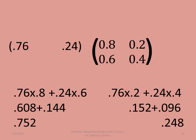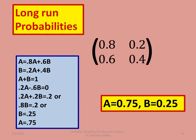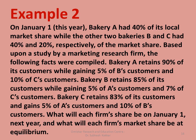To find the long-run (equilibrium) probabilities, we set up equations from the transition matrix [0.8, 0.2; 0.6, 0.4]: A = 0.8A + 0.6B and B = 0.2A + 0.4B, with A + B = 1. Solving these equations gives A = 0.75 and B = 0.25. These are the long-run probabilities: Pepsi will have 75% of the market share and Coke will have 25% in the long run.